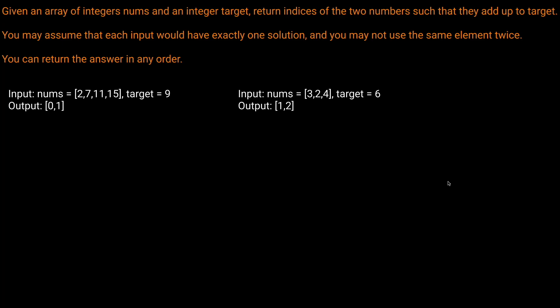That being said, let's read the question prompt. Given an array of integers nums and an integer target, return indices of the two numbers such that they add up to target. You may assume that each input would have exactly one solution, and you may not use the same element twice. You can return the answer in any order.